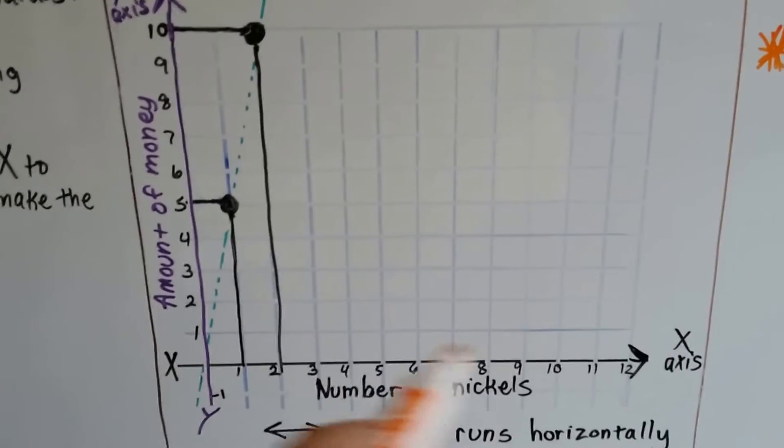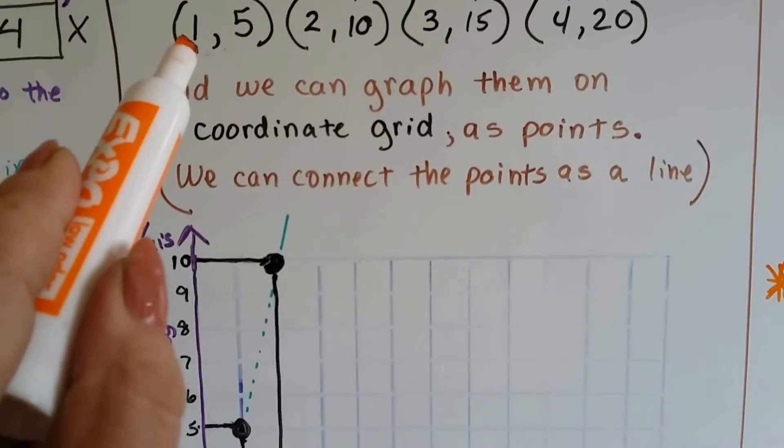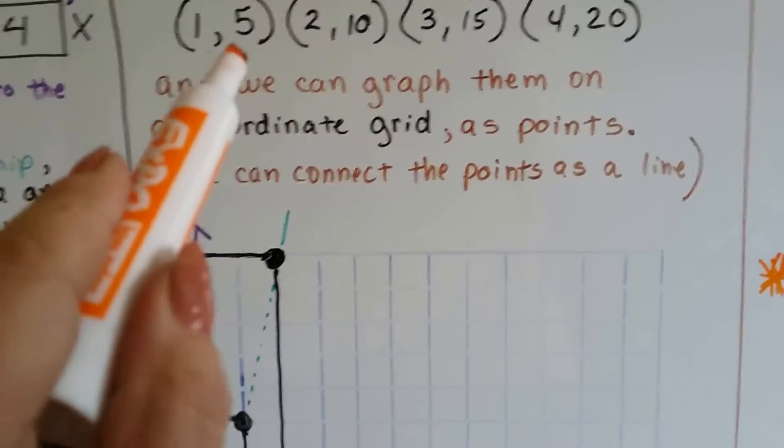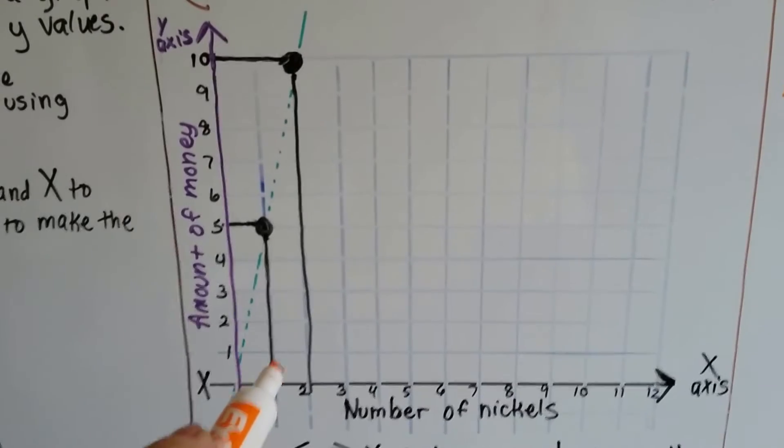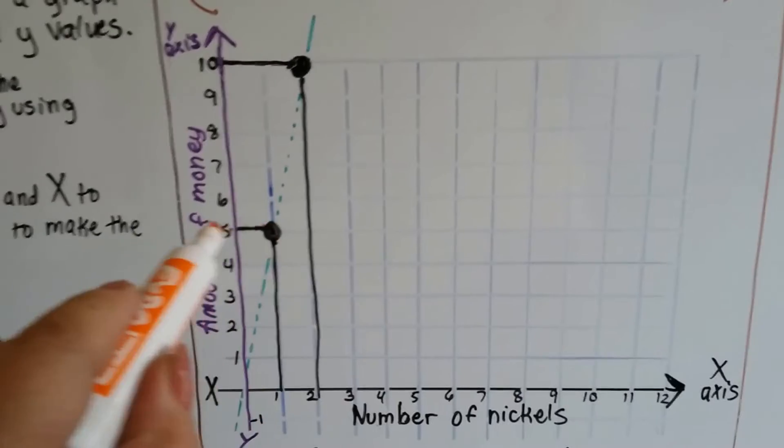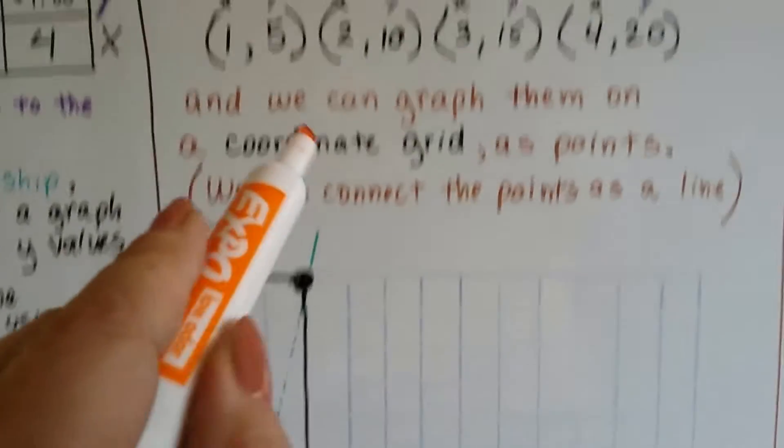It's our x value. And we can have them meet according to the ordered pairs. So if we have a 1 as an x and a 5 as a y, we go to 1 on the x line, and we go up until we hit 5 on the y line. And then we make our point right here.